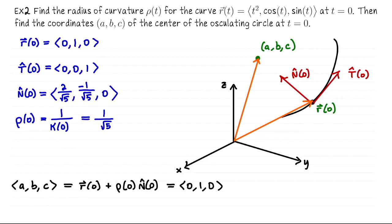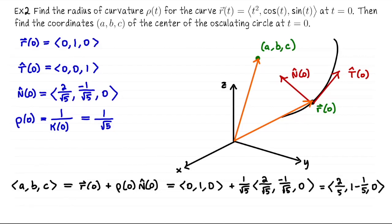Now back to this problem: r(0) was (0, 1, 0), the radius was 1/√5, and the direction was N-hat = (2/√5, -1/√5, 0). Doing coordinate addition: (0 + 2/5, 1 - 1/5, 0) gives us (2/5, 4/5, 0). So the center of the osculating circle is at (2/5, 4/5, 0).